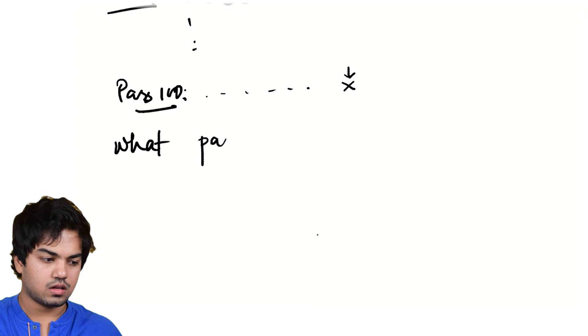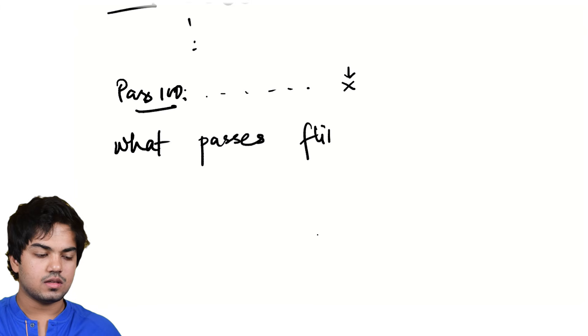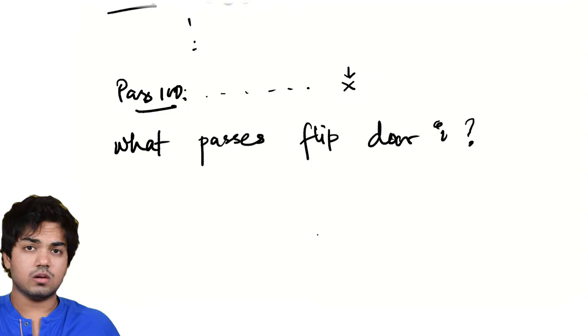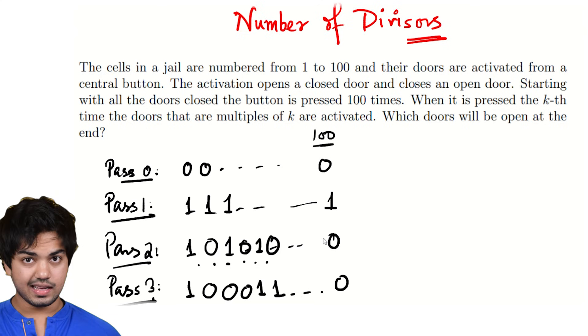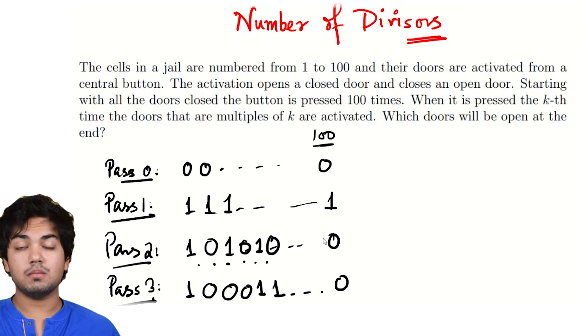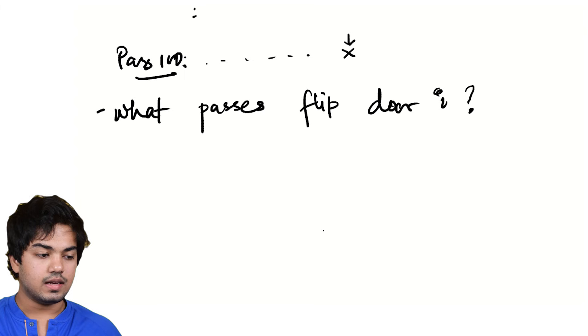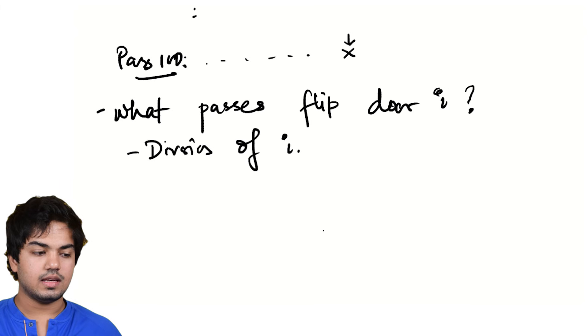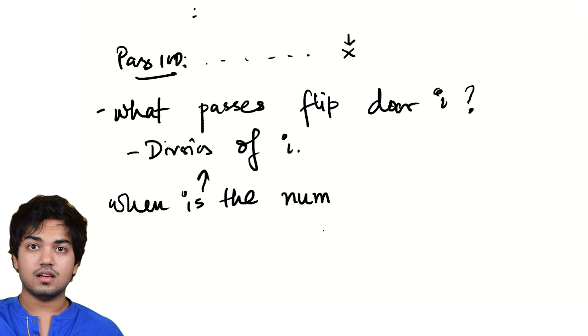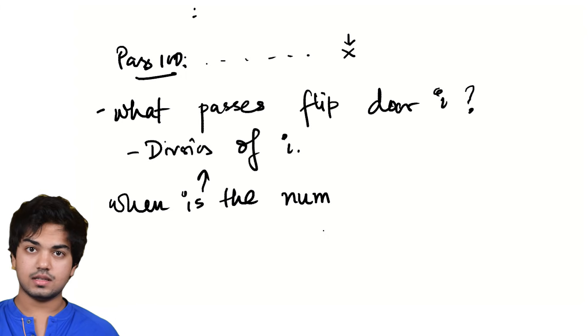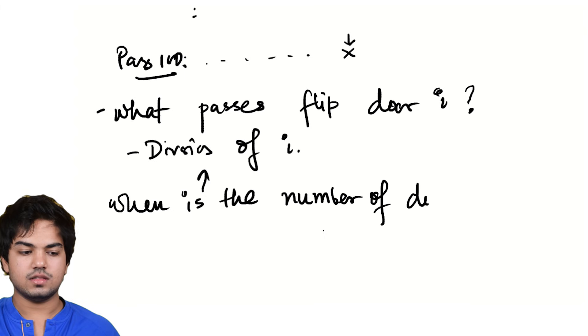What number passes flip, say, door i? That's a reasonable question. What passes flip door i? And since a door is flipped only at a pass k, door i is flipped only at a pass k if and only if k divides i. i is a multiple of k. That's what it means. So the passes that flip door i are exactly the divisors of i. That makes sense. So really what you're asking is when is the number of divisors of i odd or even? So how many times will the door i flip? The number of divisors of i times. Door 2 is flipped once for pass 1 and once for pass 2. Door 10 is flipped once for pass 1, once for pass 2, once for pass 5 and once for pass 10. You get the drift.